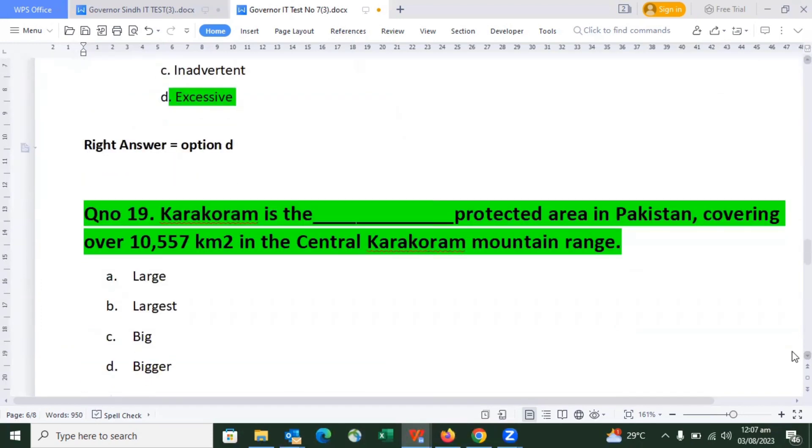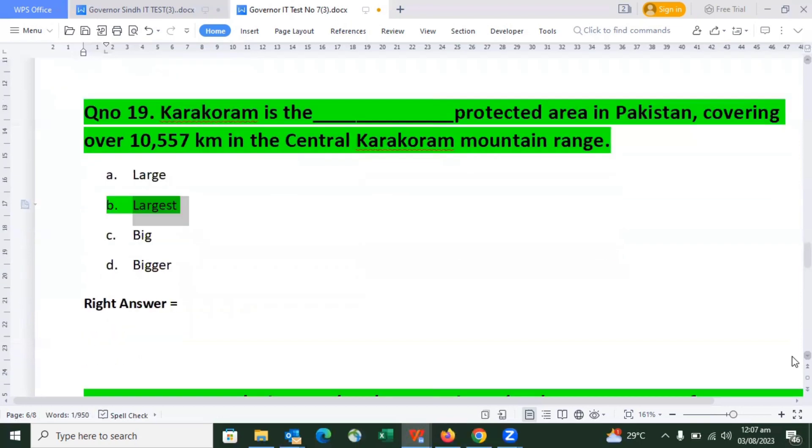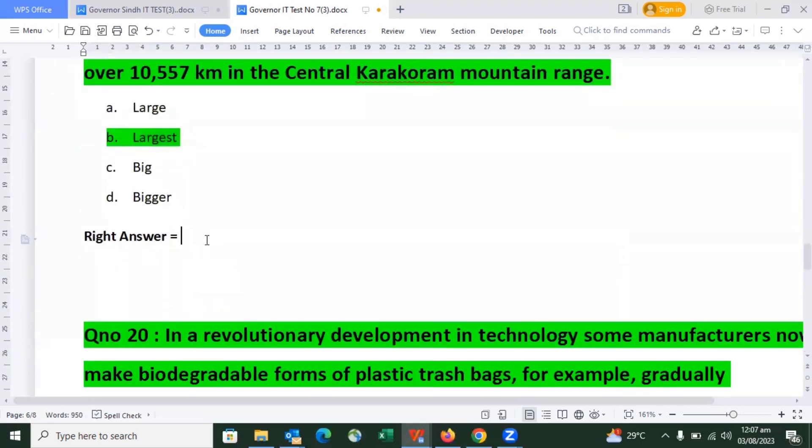Question number 19: Karakoram is a protected area in Pakistan covering over 10,557 square kilometers in the center of the Karakoram mountains. Option D is the right answer.